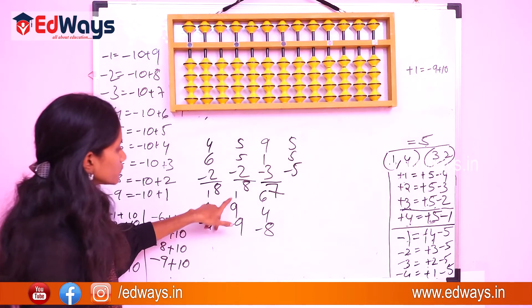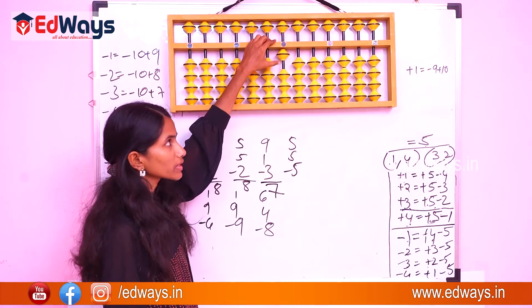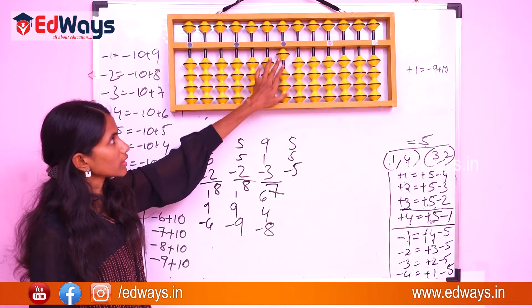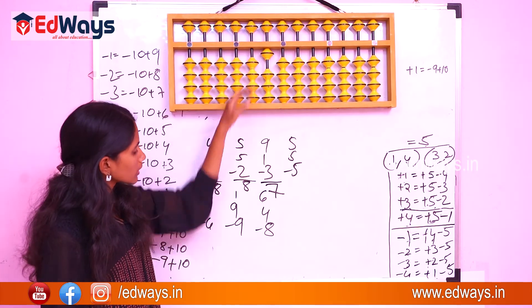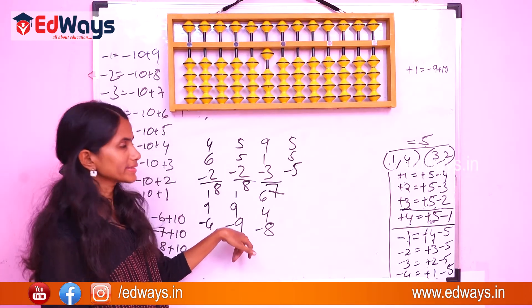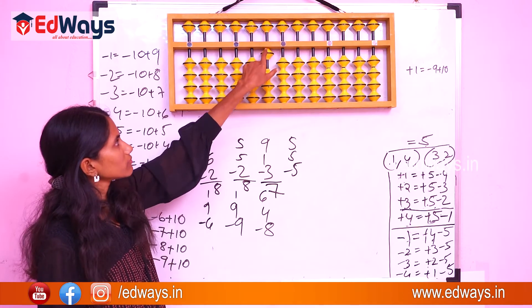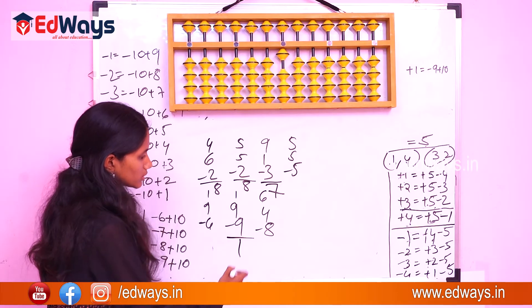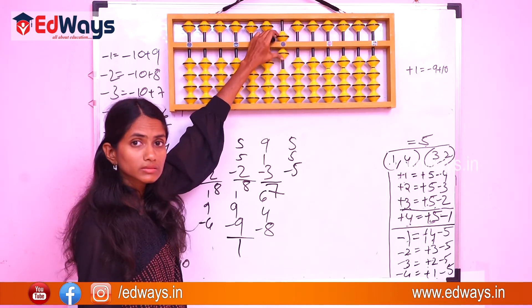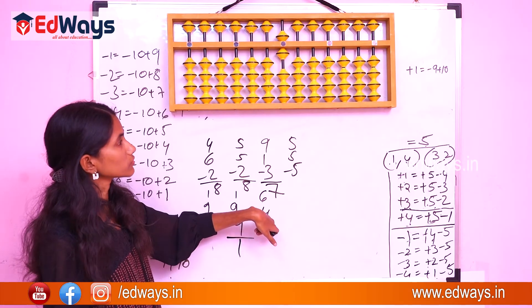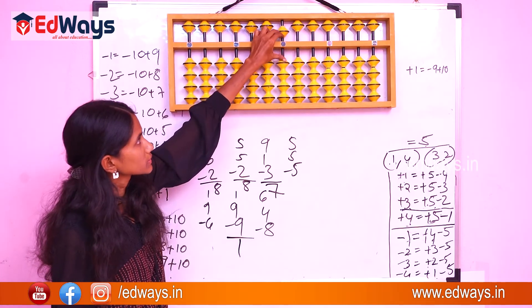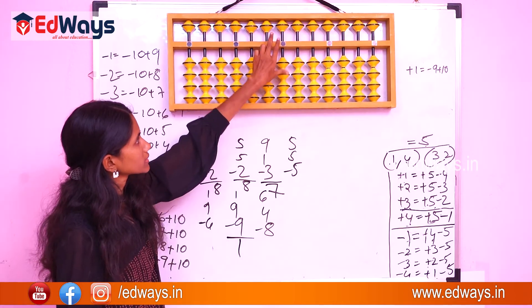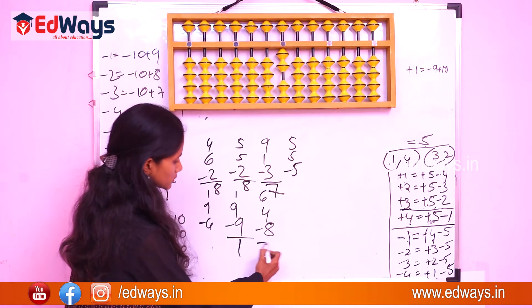We can go ahead with 1 plus 9 minus 9. Plus 9 is possible? No, because only 8 positions are available. So 9 is minus 1 plus 10. Again minus 9 — minus 9 would be minus 10 plus 1. So the answer would be 1. Now 6 plus 4 — what is plus 4? That is minus 6 plus 10. And minus 8 — 8's complement is 2, so minus 10 plus 2. The answer is 2.